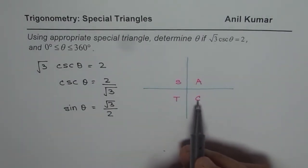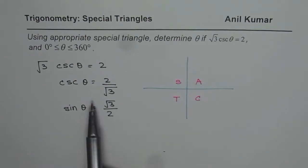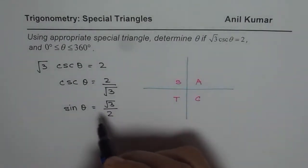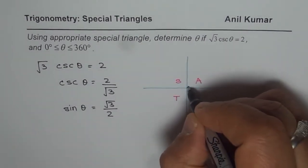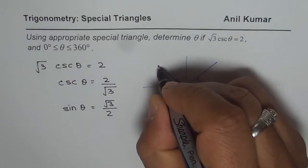All students take calculus, or the CAST rule. Sine being positive in quadrants 1 and 2, that means we are expecting two solutions—one here and the other one here.